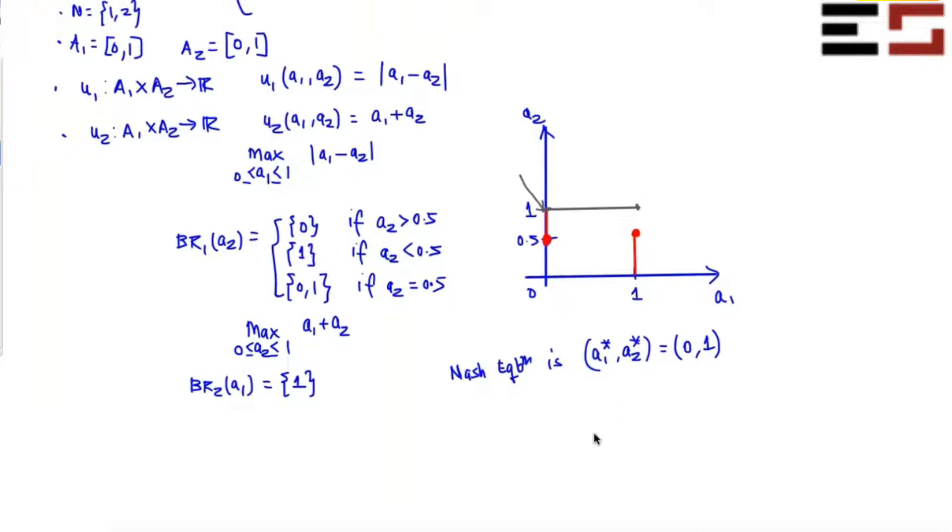Let's move on to slightly more interesting games. If player one can take only two actions and player two can also take only two actions, you can analyze those games without necessarily finding the best response by writing it out. You can actually write the payoff in the form of a matrix and then analyze it.